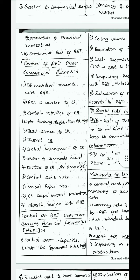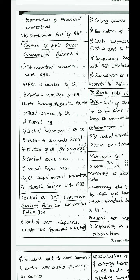The next important concept is control of RBI over commercial banks — this has also been asked as a 10-mark question. Commercial banks must maintain accounts with RBI. RBI acts as a banker to commercial banks — it accepts their deposits and gives them loans. RBI controls activities of commercial banks under the Banking Regulation Act 1949. RBI issues licenses to commercial banks — any commercial bank that wants to establish must take a license from RBI. RBI can also inspect any commercial bank if it is working against the interest of depositors.